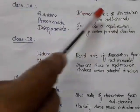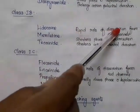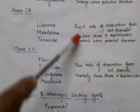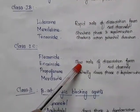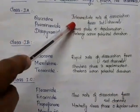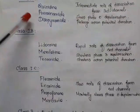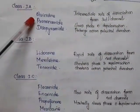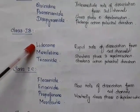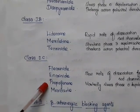Regarding rate of dissociation from sodium channels: Class 1a has an intermediate rate, Class 1b has a rapid rate, and Class 1c has a very slow rate. Examples: Class 1a — quinidine, procainamide, disopyramide; Class 1b — lidocaine, mexiletine, tocainide; Class 1c — flecainide, encainide, propafenone, and moricizine.